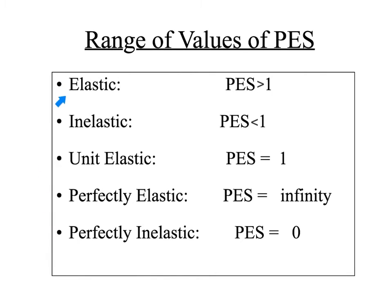For elastic and inelastic, it's important to know as a supplier whether you can respond quickly to a change in price. The more elastic your good is, the more likely you'll be able to respond — if the price goes up, you can produce more; if the price goes down, you can cut production. If it's inelastic, or less than one, then the opposite would be true.